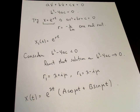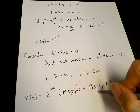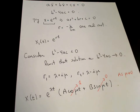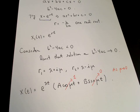As mu goes to 0, cosine of mu-t goes to 1, and sine of mu-t goes to 0. So it looks like x of t will just be a times e to the lambda-t — but that's only our single solution. In order to continue satisfying the two initial conditions as mu goes to 0, b must go to infinity, so that b times sine mu-t goes to some non-zero quantity.